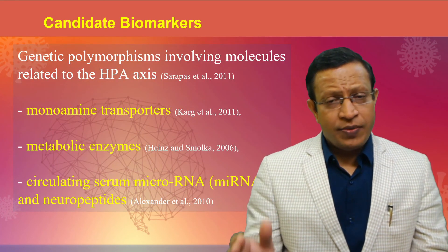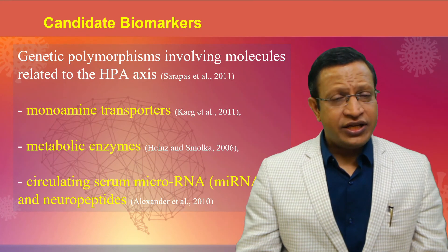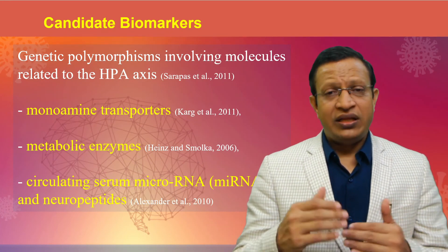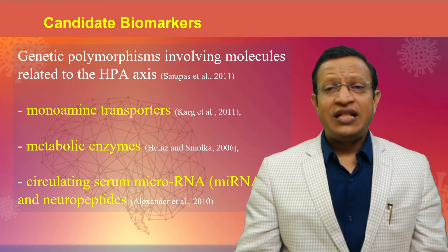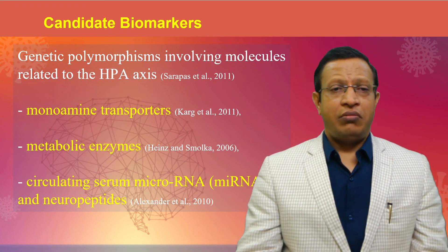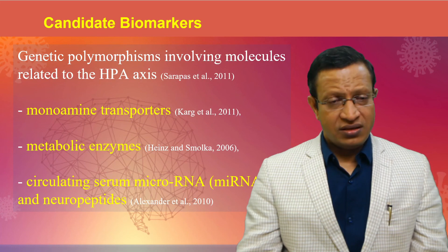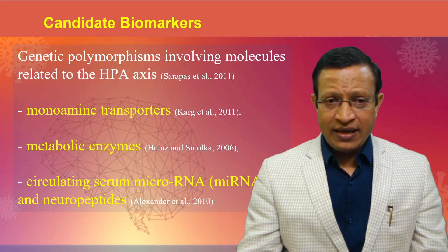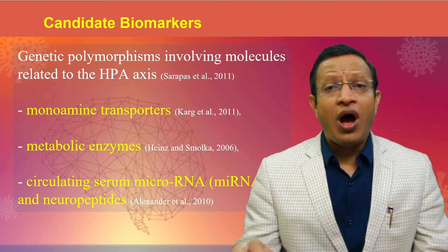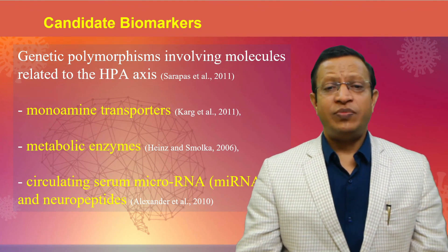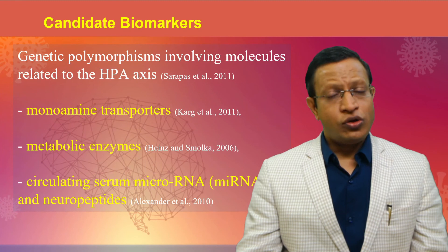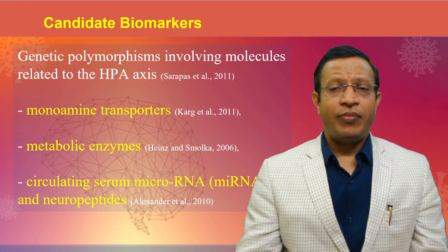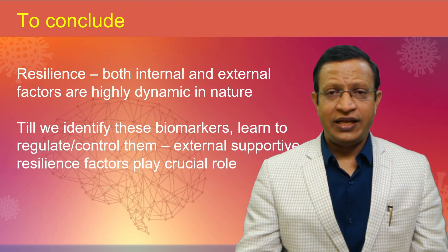Coming to the candidate biomarkers: some biomarkers in the HPA axis have been found, including genetic polymorphisms — monoamine transporters, metabolic enzymes, circulating microRNA, which has been recently discussed, and neuropeptide Y. These are the very important candidate gene biomarkers that have been studied in resilience.